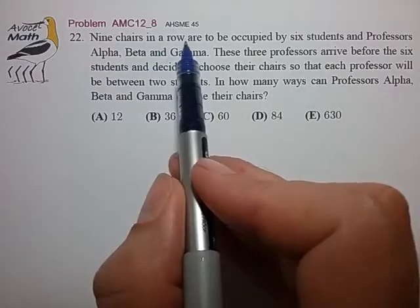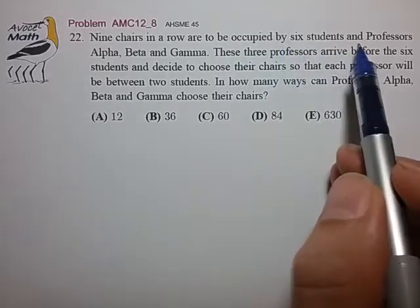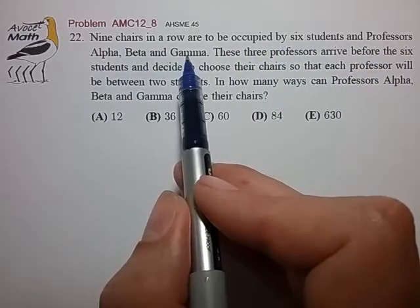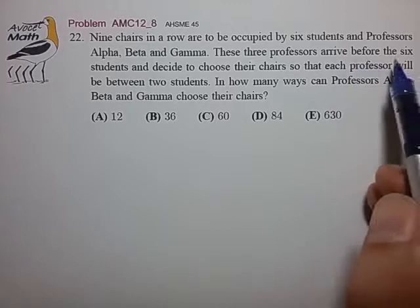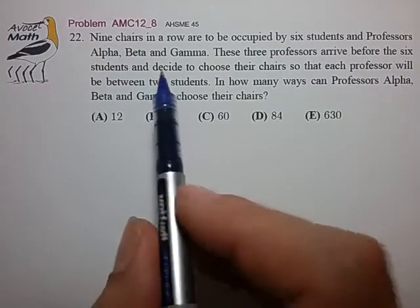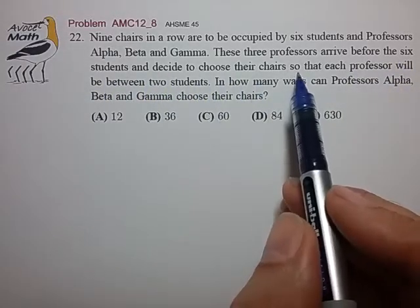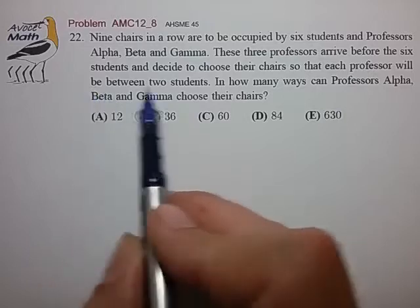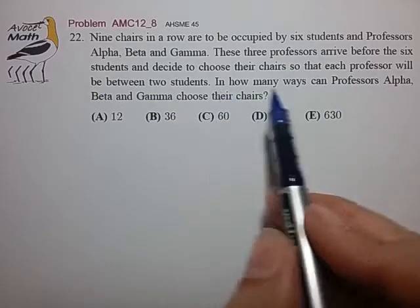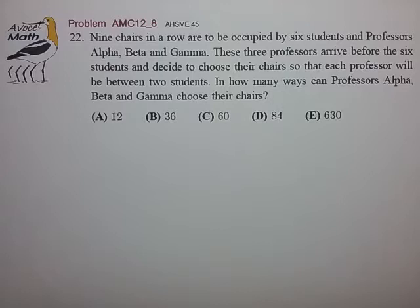Nine chairs in a row are to be occupied by six students and professors Alpha, Beta, and Gamma. These three professors arrive before the six students and decide to choose their chairs so that each professor will be between two students. In how many ways can the professors choose their chairs?